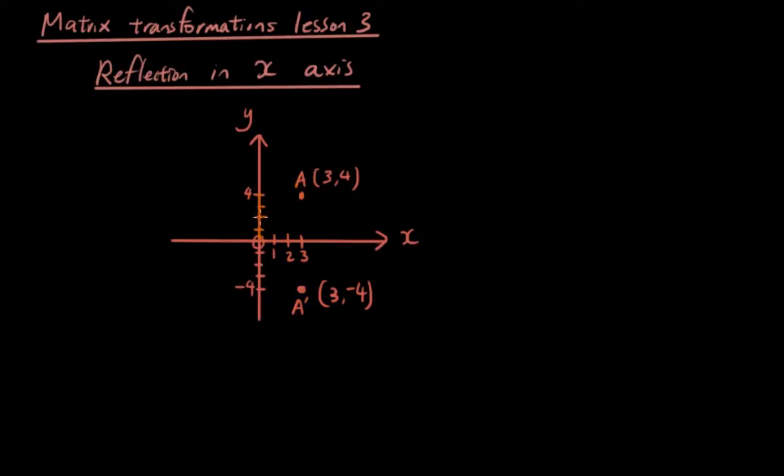Let's do another quick example. Let's say we have the point over here, point B. And let's say it has the coordinates. Now if I reflect it, it will be over here and the coordinates will be.